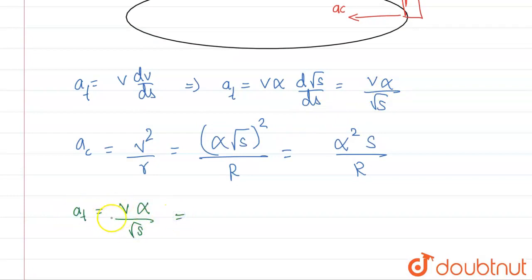We can write that v is alpha root s. So this will be alpha root s times alpha divided by root s. And there will be one more thing in this differentiation.